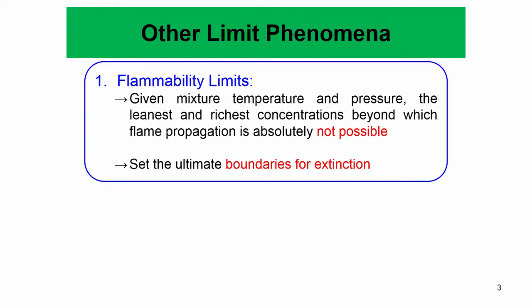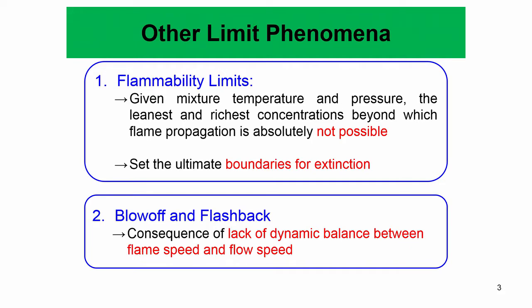There can also be flammability limits — given mixture temperature and pressure, what are the leanest and richest concentrations beyond which flame propagation is absolutely not possible. These set the ultimate boundaries for extinction. Blow-off and flashback are essentially a lack of dynamic balance between flame speed and flow speed, and extinction and heat-loss phenomena can also be involved, as will be shown later when considering flame stabilization mechanisms in afterburners and scramjets.